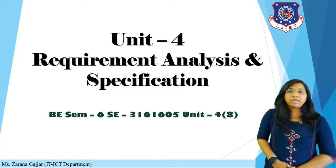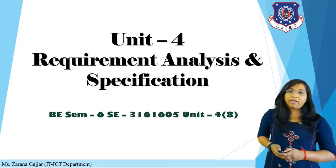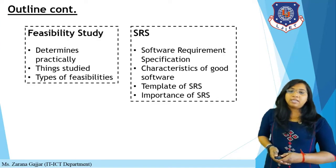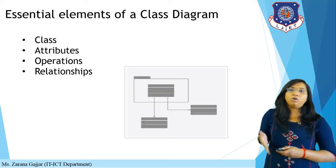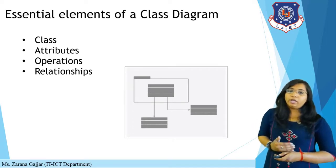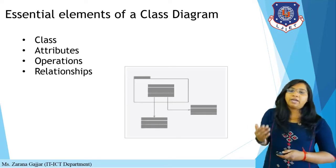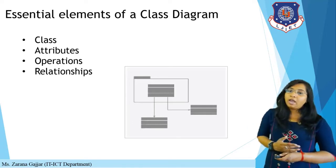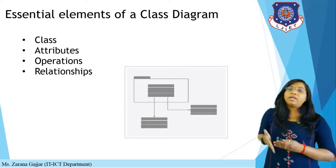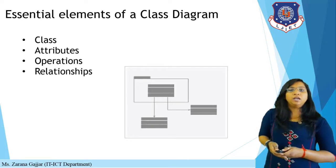In the previous lecture we learned about a class diagram. In a class diagram we covered elements like class, attributes, operations, and relations. We completed the class, attribute, and operation elements. Now we will continue with the relationship element of a class diagram.